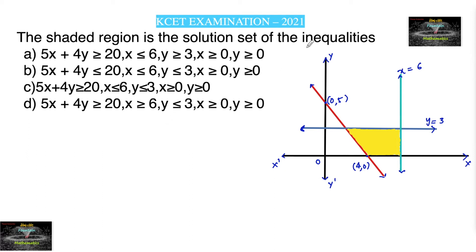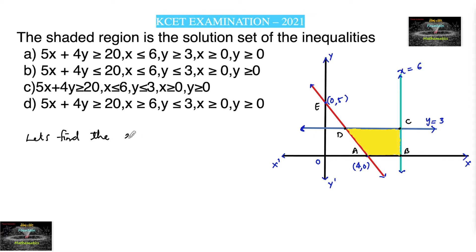The shaded region is the solution set of the inequalities. The four options are given along with the line equations and inequalities. Let's label the key points: this is point A, this is point B, this is C, D, and this point is E. We need to find which inequalities represent this shaded region A, B, C, D. Let us find the line equation AE.